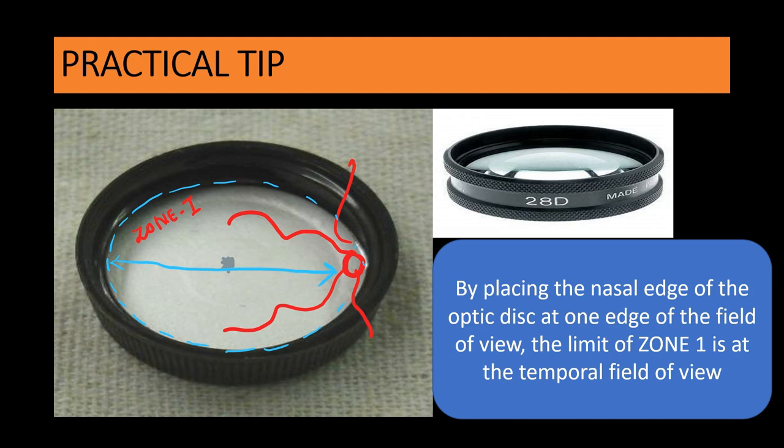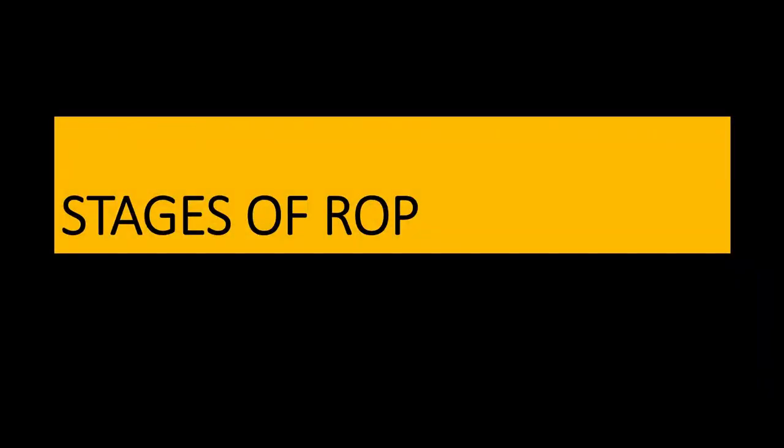Now let us talk about a practical tip. In the real world, ascertaining retinal zones to classify ROP can be done easily using a 28-diopter lens. Place it so that the nasal edge of the optic disc is at one side of the lens; the temporal field of the 28-diopter lens will then show you the temporal zone 1 area. That's a very important practical tip. Now let us talk about the stages of ROP.